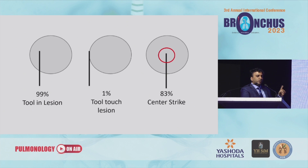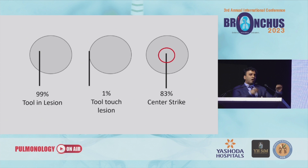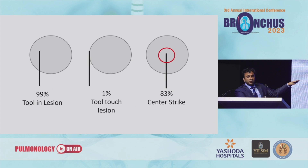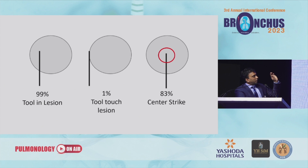The one thing with cone beam that you cannot do with any other modality is guarantee tool-in-lesion. We had 99% tool-in-lesion and 1% tool-touch-lesion. Why would that happen? Some lesions are like a toothpick and an olive — you push and it doesn't quite penetrate. Or you're up against the pleura and don't want to go CenterStrike. Sometimes there's tissue distortion where the nodule moves away from the catheter — you'll have to use forceps or cryobiopsy. But astonishingly, you can get 83% CenterStrike — the center of a lung lesion in three orthogonal planes: axial, sagittal, coronal. That's an amazing number, enabling future therapeutics and ablation.